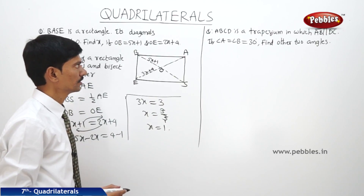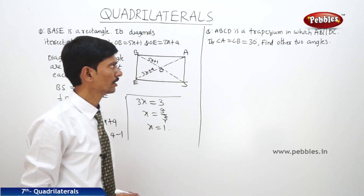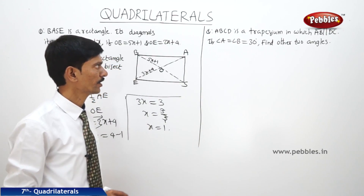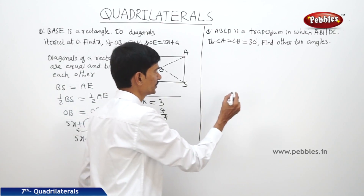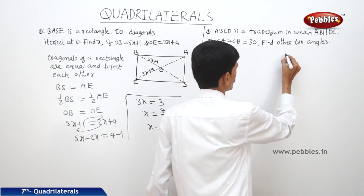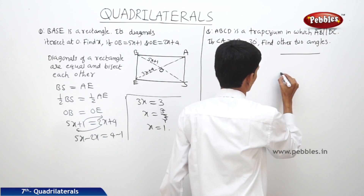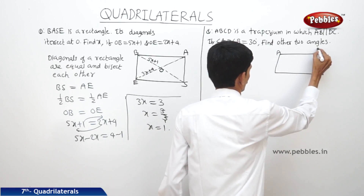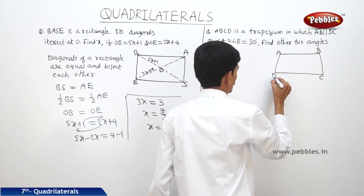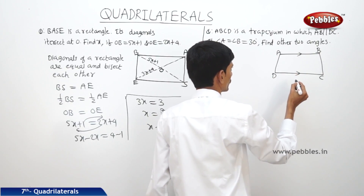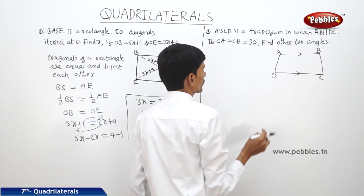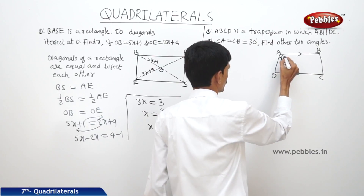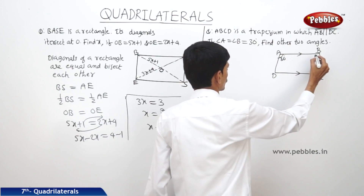The next question: ABCD is a trapezium in which AB is parallel to DC, and angle A equals angle B equals 30 degrees. Find the other two angles. In trapezium ABCD, AB is parallel to DC, and angle A equals 30 degrees, angle B equals 30 degrees.